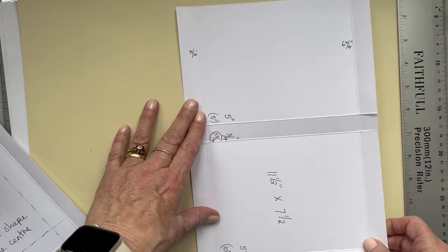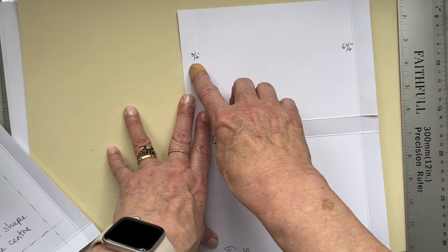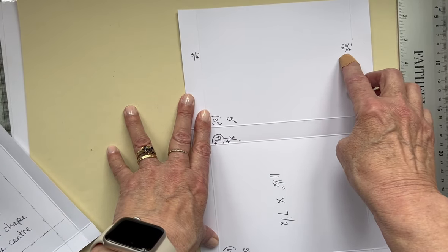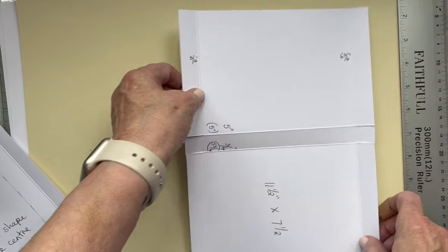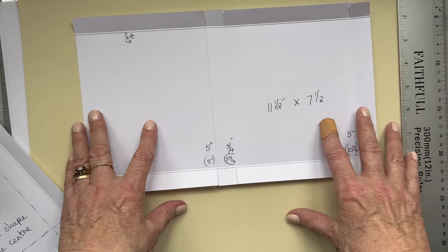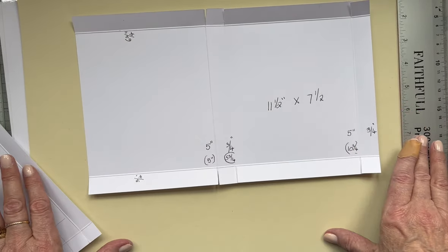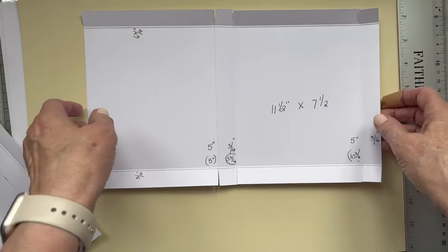Then you turn it around this way. You score three quarters of an inch and then six and three quarters. That's all the scoring to be done on this one. If you want to screenshot that, now's your time to do that.